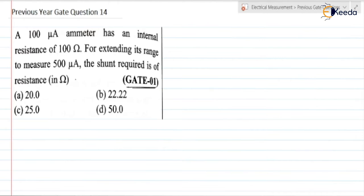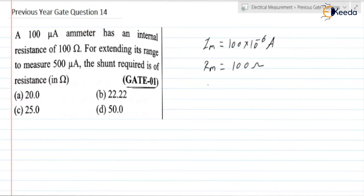This is regarding the extension of range of an ammeter. It is given that Im is equal to 100 into 10 to the power minus 6 ampere. Internal resistance Rm is equal to 100 ohm. Extending its range, so I is equal to 500 micro ampere, that is 500 into 10 to the power minus 6 ampere. We need to find Rsh.